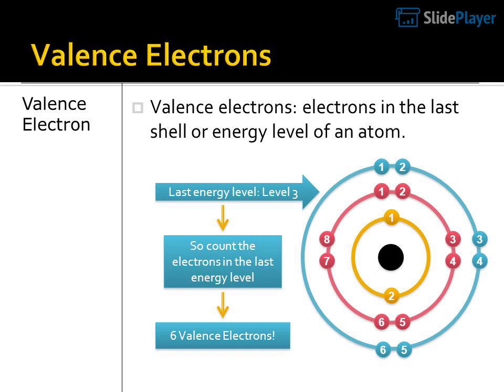Counting the last energy level: 7, then 4, 4, 4 — and here 2, 6, 5 valence electrons.